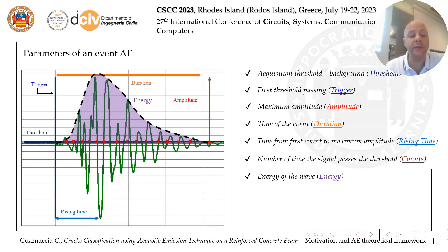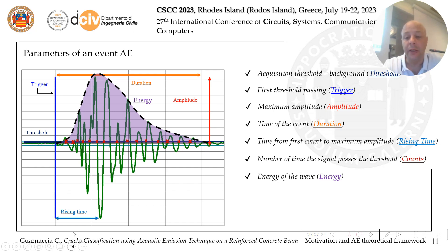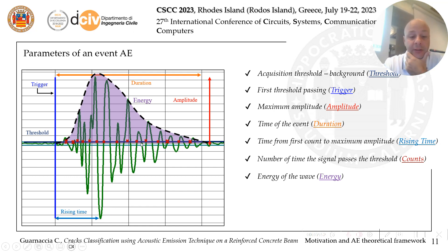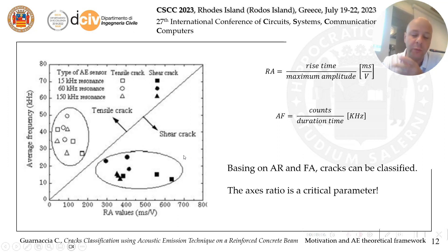About the acoustic emission: this is a typical spike of an acoustic emission detected by our sensors, and the different colors represent different parameters of the acoustic signal. We have the threshold, which is fixed according to the background noise in order to separate background from signal. Then there is the trigger — the first threshold surpassing — the maximum amplitude of the signal, the duration time from the first to the last threshold surpassing, the rising time from the first to the maximum amplitude, and the counts — the number of times the signal passes the threshold. Finally, the integral of the envelope of the signal is the energy of the event, which we will call the 'hit.'